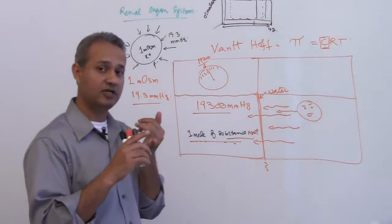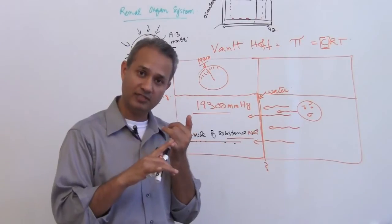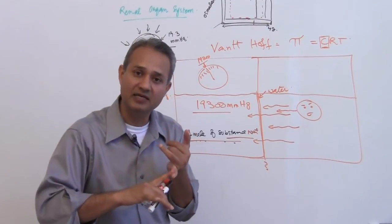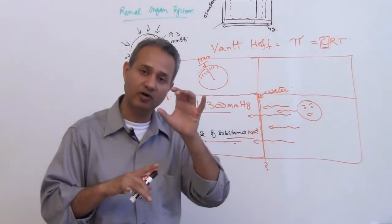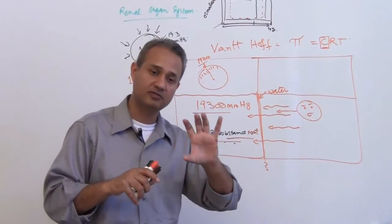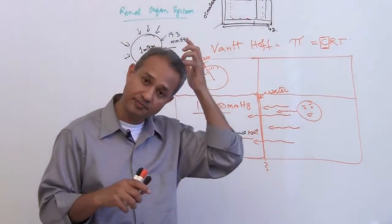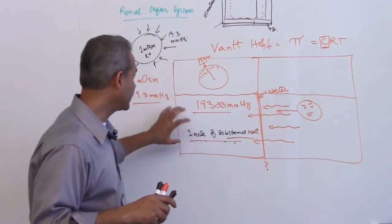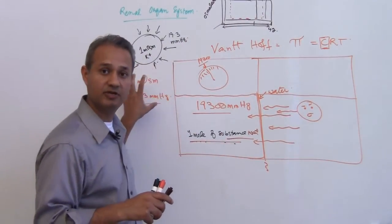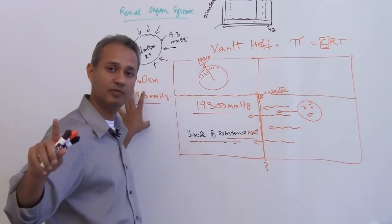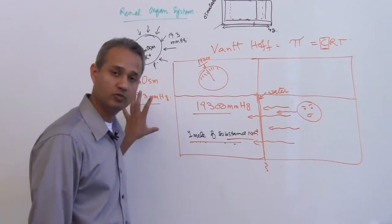Now we have understood what is a mole of a substance, what is molarity or osmolarity. When one mole of a substance is present in a fluid we call that an osmol, and we connected that to osmotic pressure. One milliosmole has 19.3 millimeter of mercury osmotic pressure.